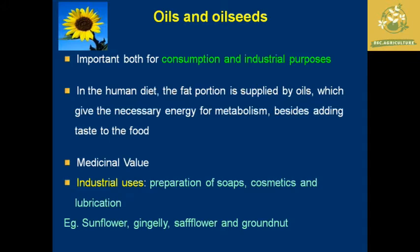Oils and oil seeds have both consumptive and industrial purposes in human needs and form a major part of the human diet. They are the components that provide fat, supply necessary energy for metabolic processes, and increase the taste of food. Some crops also give medicinal value — for example, castor oil is used for relieving cramps. Industrial uses include preparation of soaps, cosmetics, and lubricants. Examples include sunflower, gingelly, safflower, and groundnut.